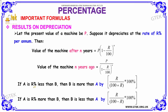If a has its value r percentage less than b, then you can say that b is more than a by r by (100 plus r) multiplied by 100 percentage, where r is the percentage that a is less than b.